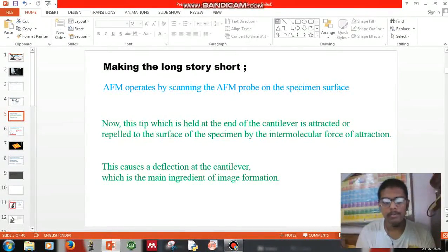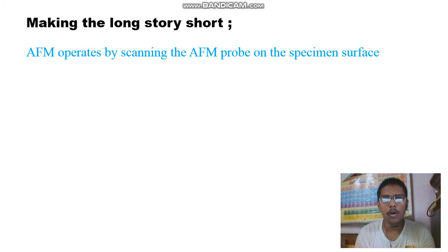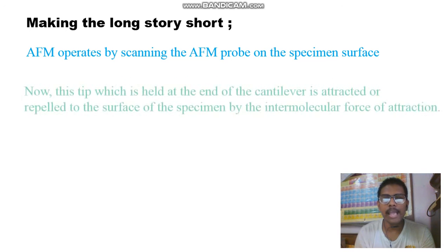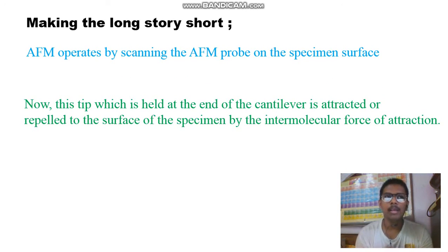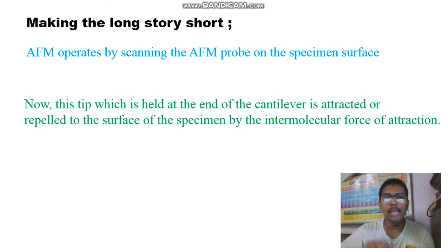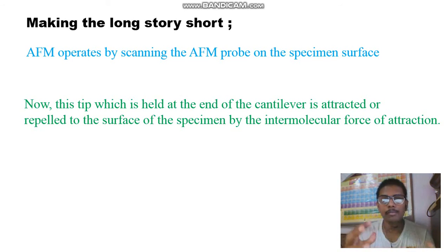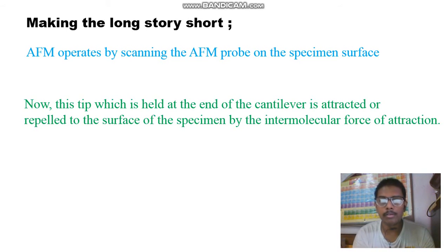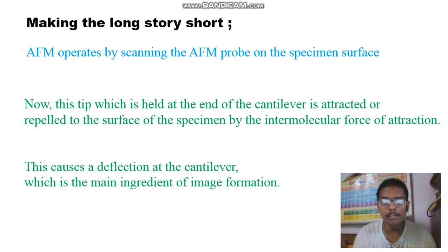The AFM principle is based upon three stages. AFM operates by scanning the AFM probe on the specimen surface, meaning the probe scans the whole surface. The tip held at the end of the cantilever is attracted or repelled to the surface by intermolecular forces. These variations in intermolecular force create variations in cantilever deflection, which is recorded by a laser at the photodiode, and thus the image is formed at your connected computer.